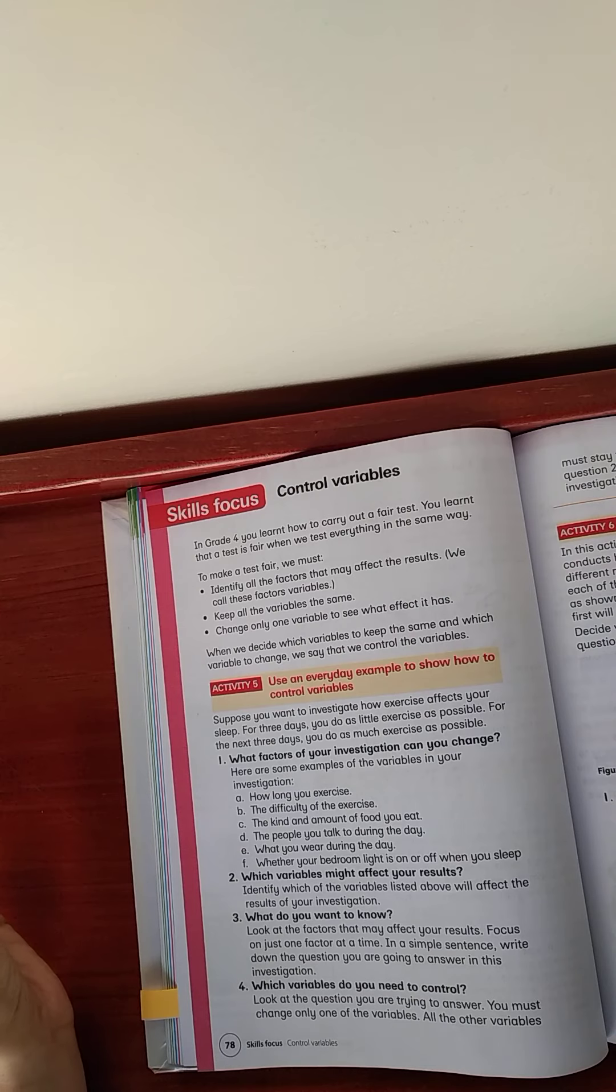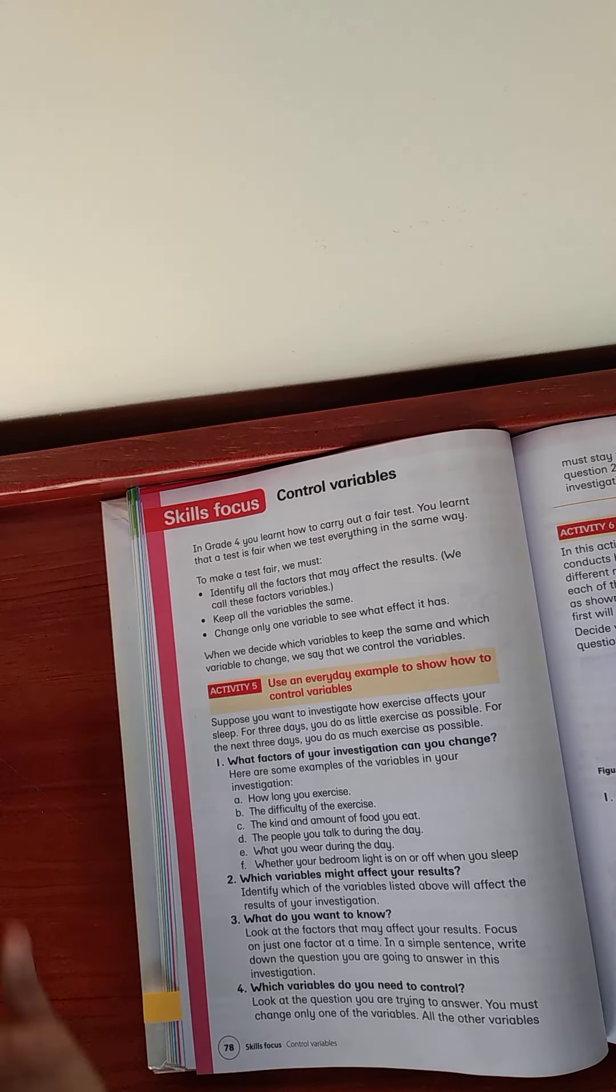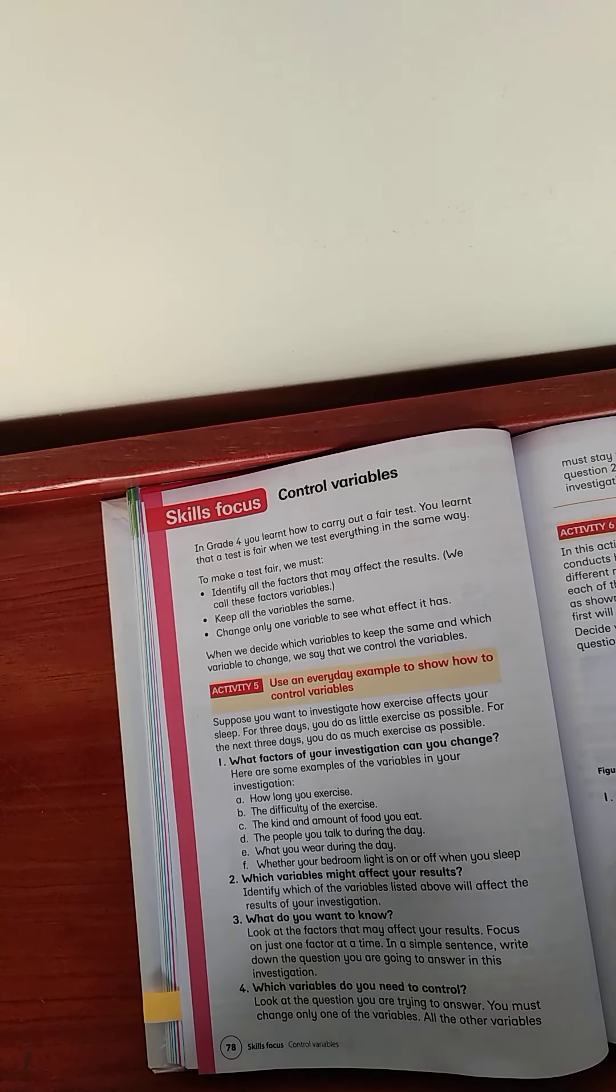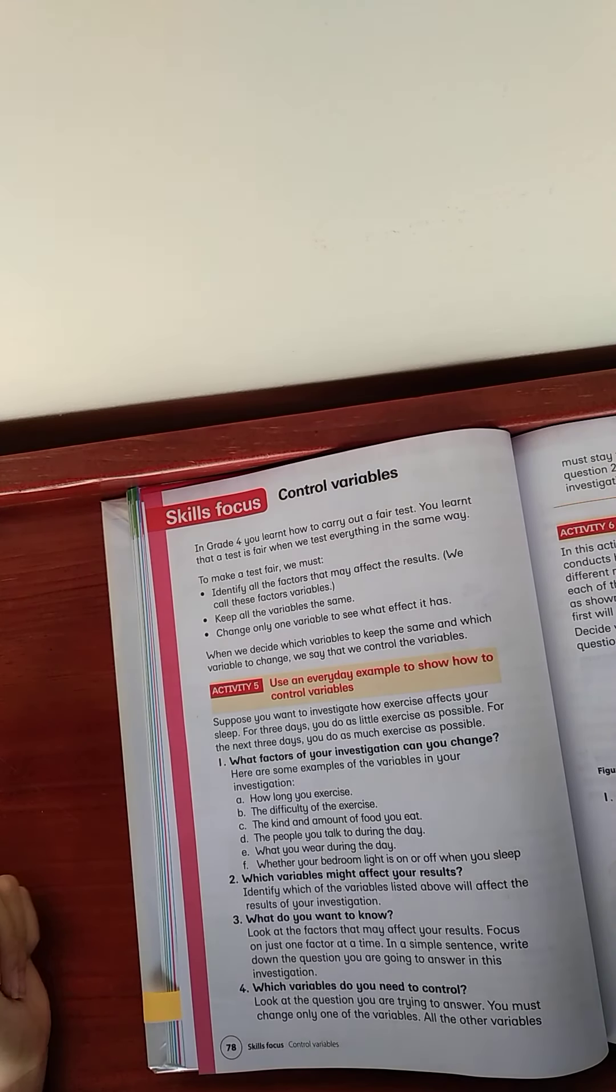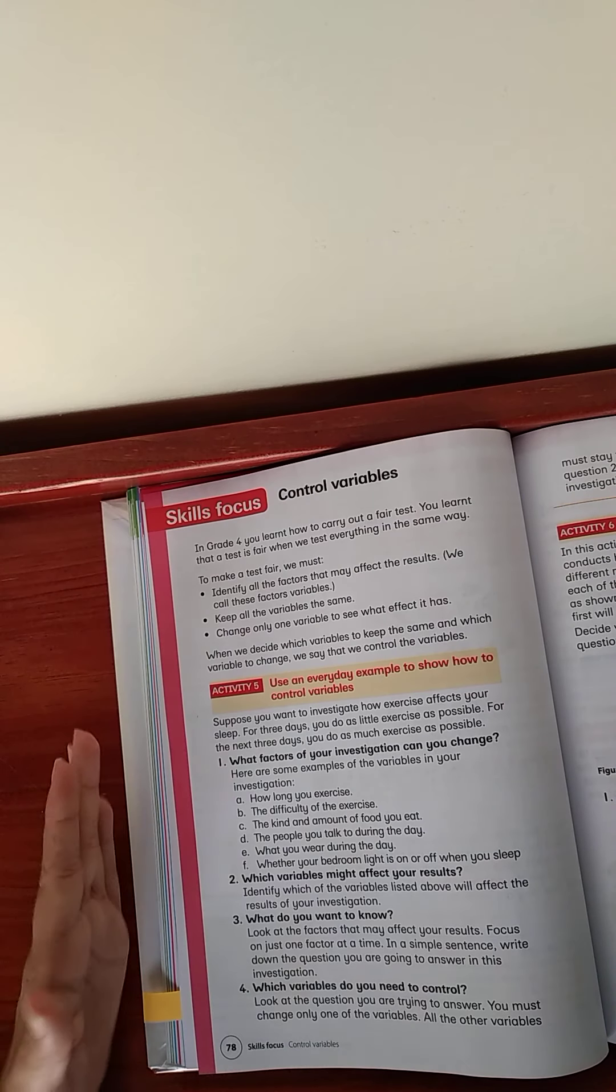So, now activity five. Use an everyday example to show how to control variables. Suppose you want to investigate how exercise affects your sleep. For three days, you do as little exercise as possible and for the next three days, you do as much exercise as possible. What factors of your investigation can change? Now, this is just something for you to, this is just an activity. This is just an example. You do not have to do this. So, one, what factors of your investigation can you change? Here are some examples. How long you exercise, the difficulty of the exercise, the kind and amount of food you eat, the people you talk to during the day, what you wear during the day, whether your bedroom light is on or off when you sleep. Do you understand that those are the variables that need to be the same on each day because each of these variables can affect the outcome.